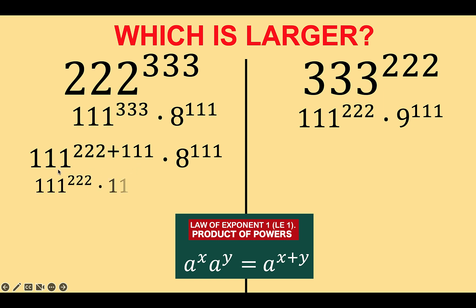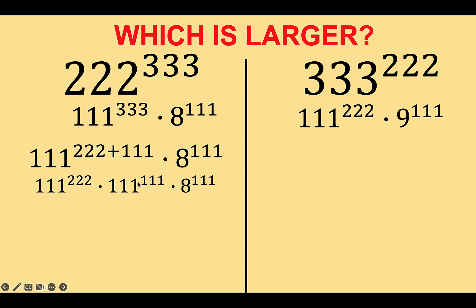So we can now write this as 111 raised to 222 times 111 raised to the second addend of the exponent, which is 111. Copy 8 raised to 111. Notice now that there is a common exponent of 111 here.